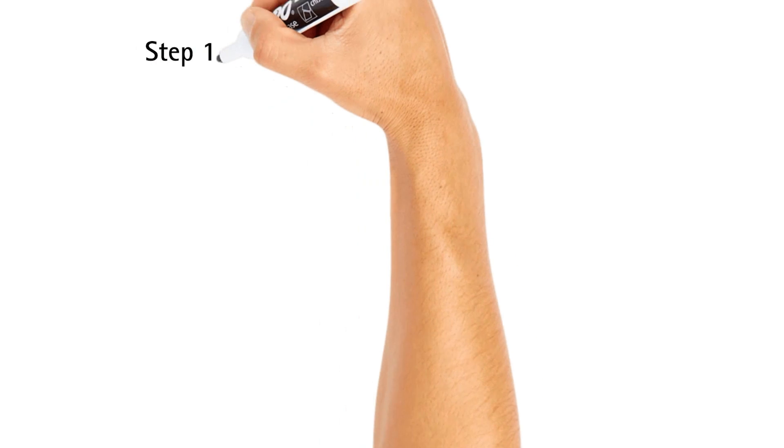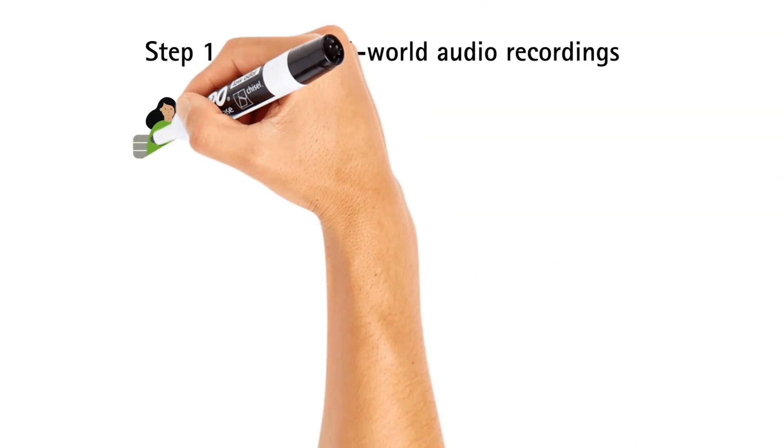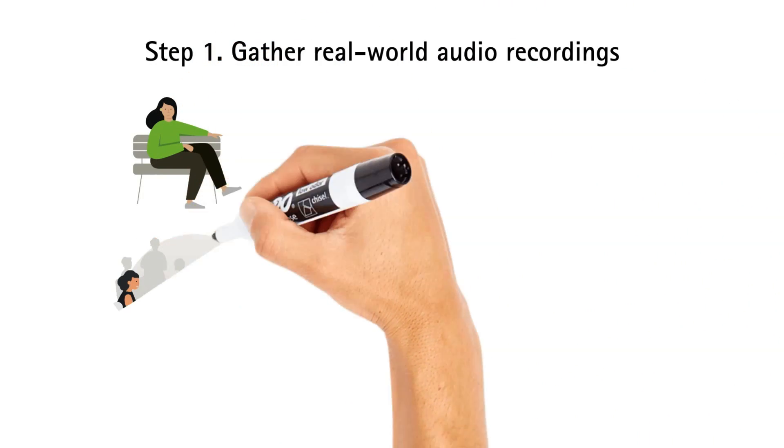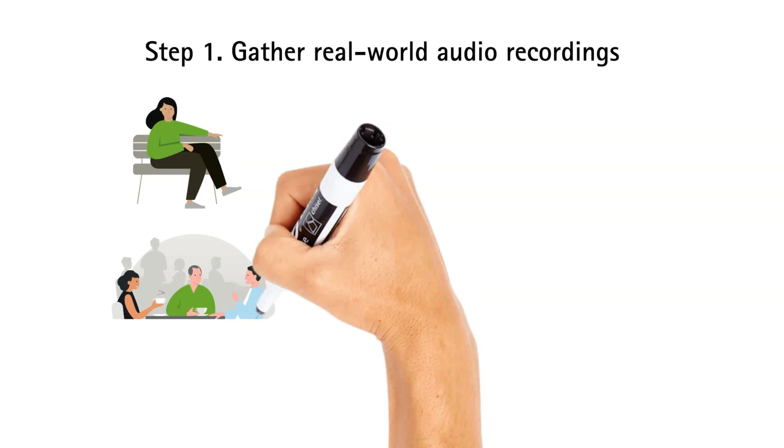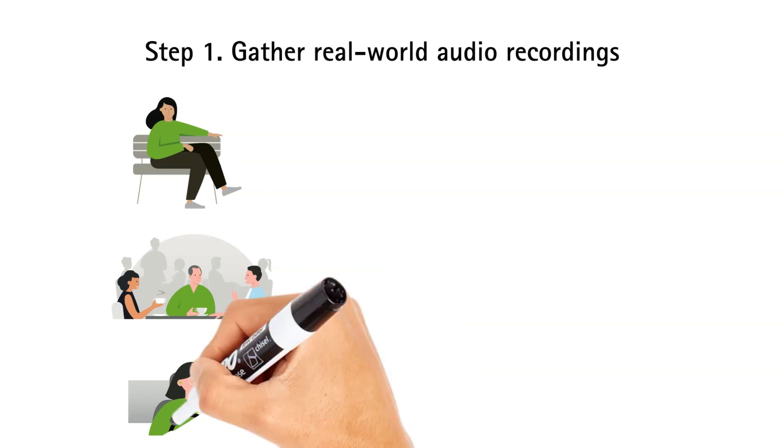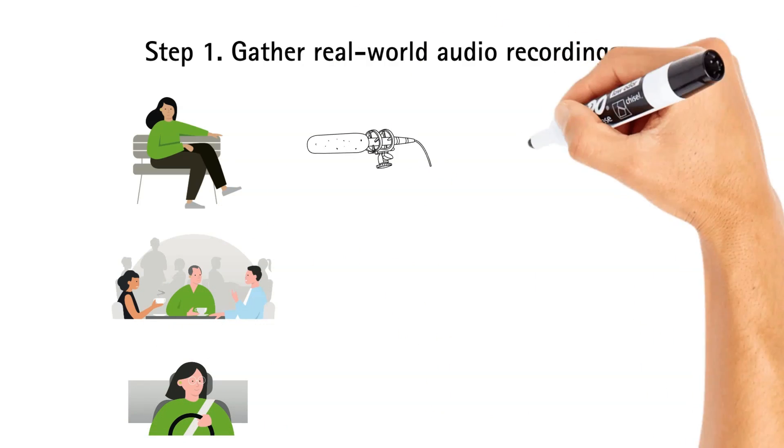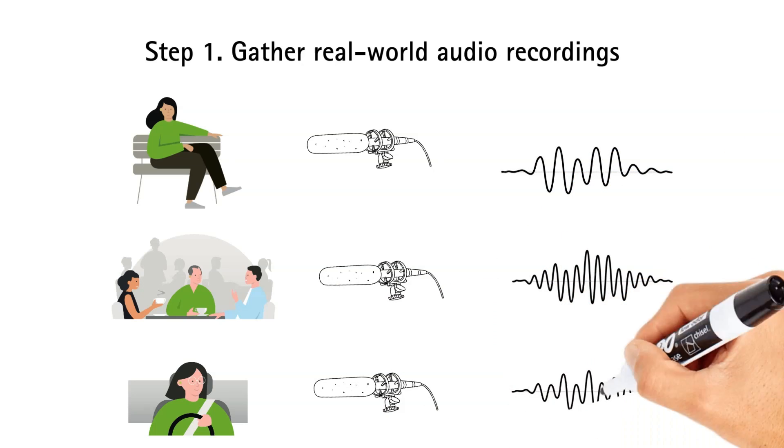The first step is to capture a substantial number of audio recordings from various environments in the real world. These recordings must be diverse and numerous, so they can properly prepare and train the machine learning algorithm to understand the types of sounds a hearing aid wearer is exposed to.